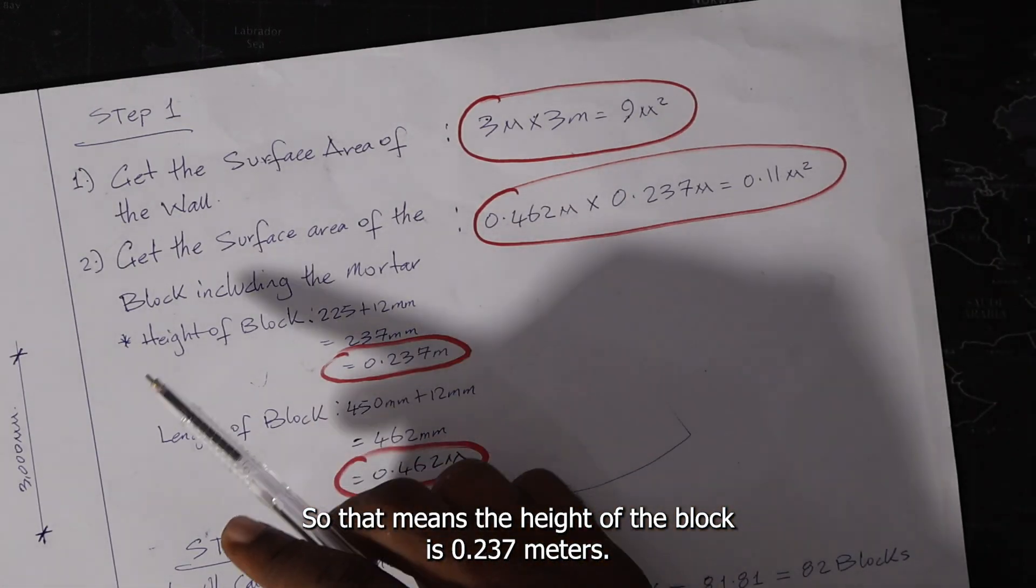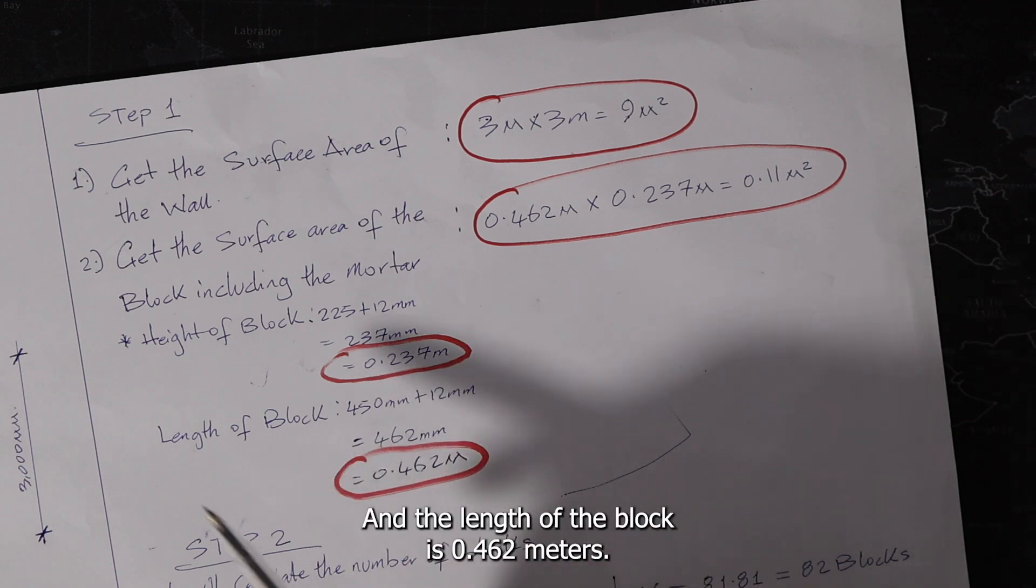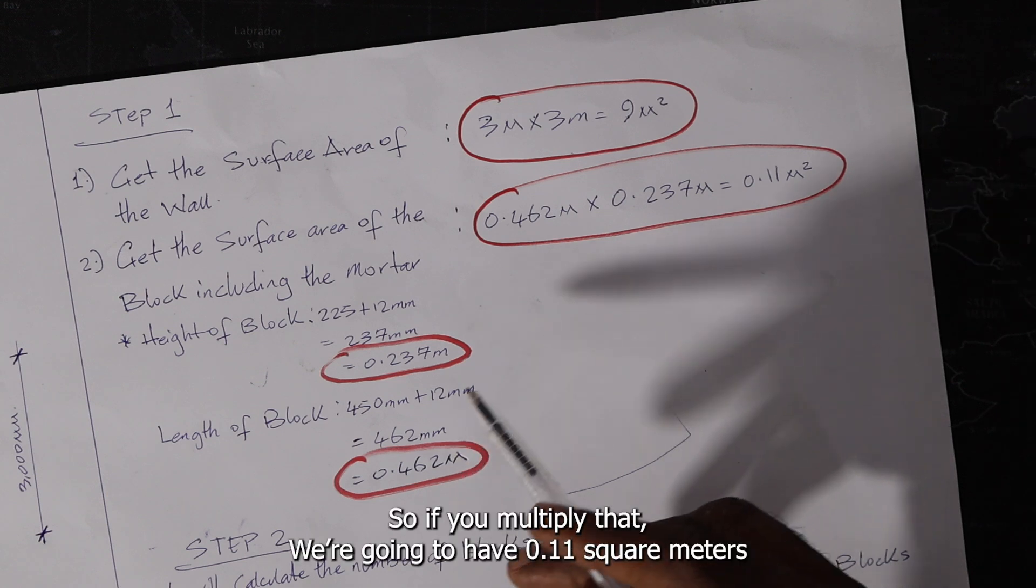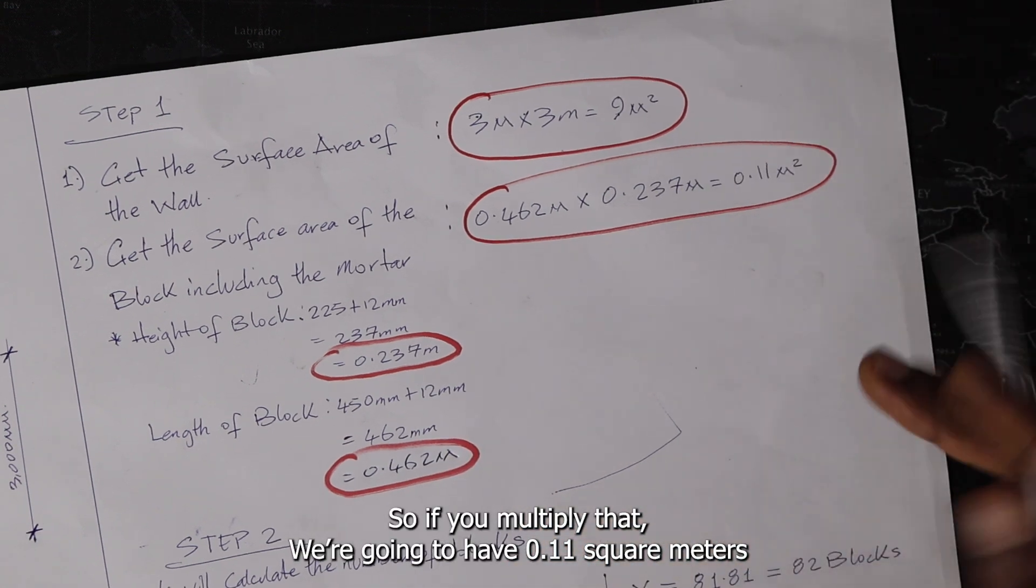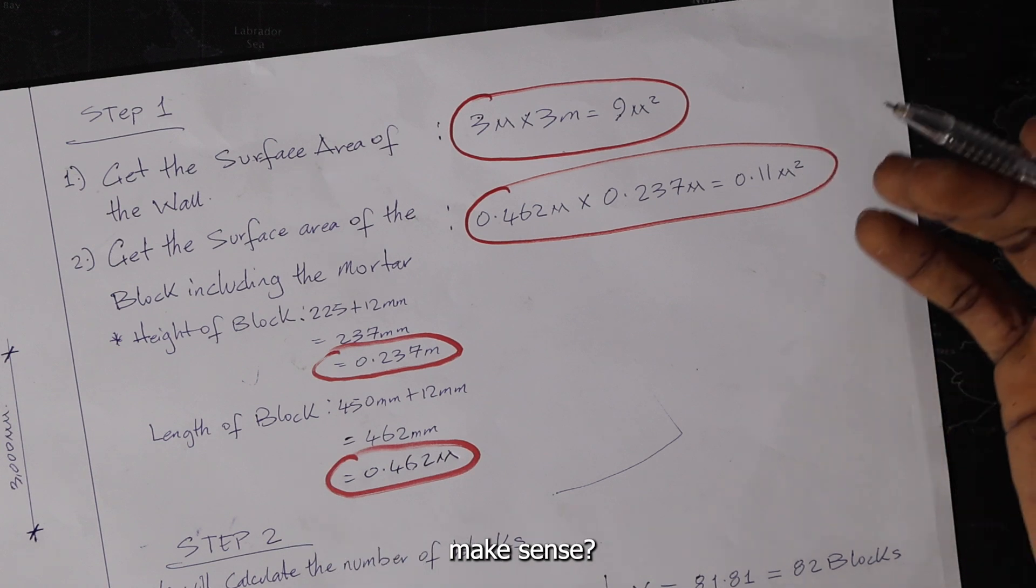So that means the height of the block is 0.237 meters and the length of the block is 0.462 meters. So if you multiply that, we're going to have 0.11 square meters.